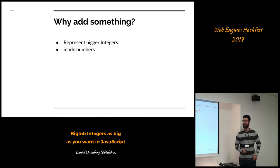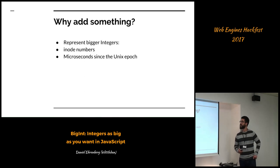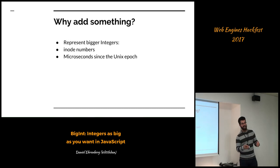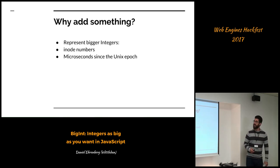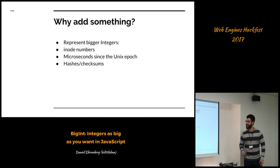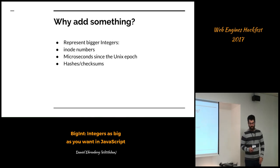For example, if you have an operating system interface, you might want to represent inode numbers. This is not for the web platform, but for Node.js — it comes up. You might want to represent the number of microseconds since the Unix epoch. If you have a monotonic timer and you're representing milliseconds, you can do that in 53 bits, but microseconds exceeds that. And it's proposed for a new date API for JavaScript to represent time this way.